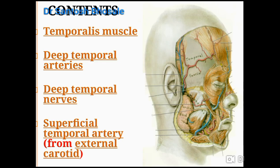Coming to the contents, the temporal fossa contains the temporalis muscle — a muscle of mastication. Deep to it there is an artery and a nerve, and superficial to it there is one artery, called the superficial temporal artery.